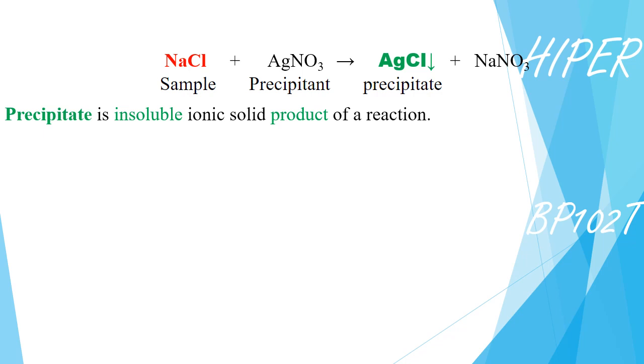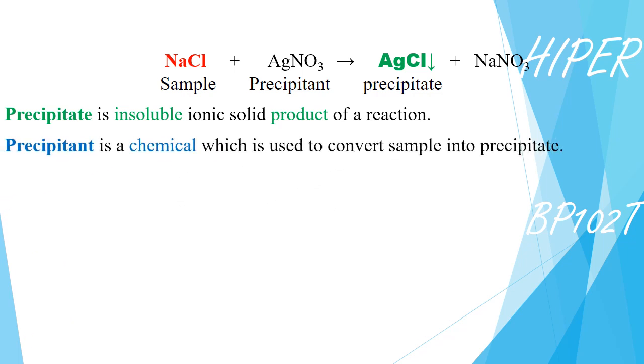And the chemical that we use to create precipitate, here is silver nitrate, we call it precipitant. That means precipitant converts the sample into the precipitate.